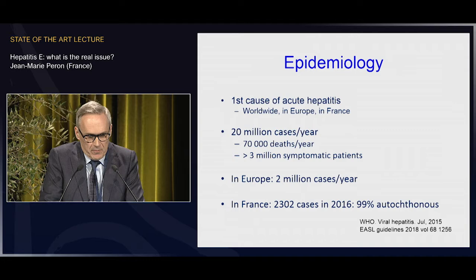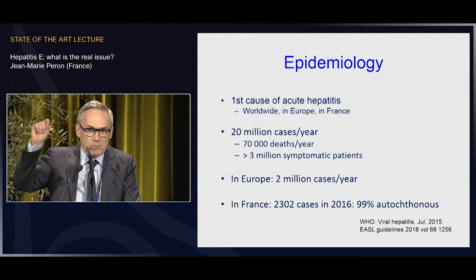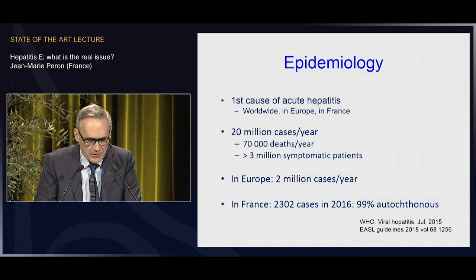A word on epidemiology: hepatitis E is the first cause of acute hepatitis in the world, in Europe, and in France. It's around 20 million cases per year, 70,000 deaths per year, and more than 3 million symptomatic patients with acute hepatitis E. In Europe, it's 2 million cases per year, and in France, 2,302 cases in 2016 — those are the latest data on incidence. But these are only the diagnosed cases.